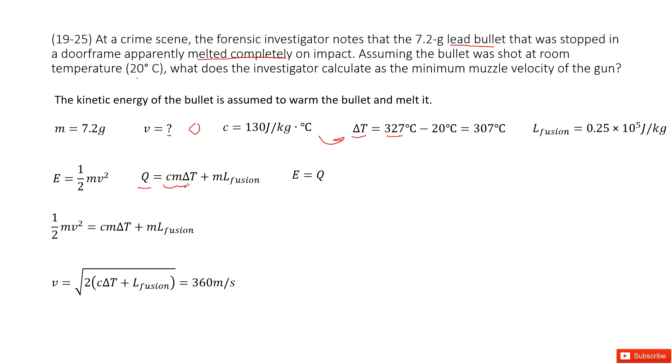The first part makes the bullet heat up, warming up. This is c m ΔT. Then it is fusing, so we use mass times the latent heat of fusion.